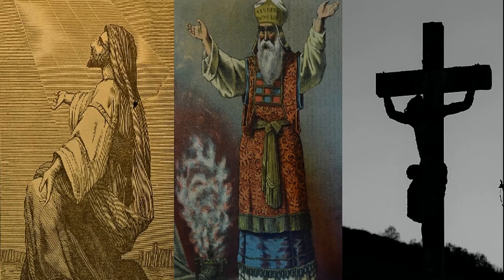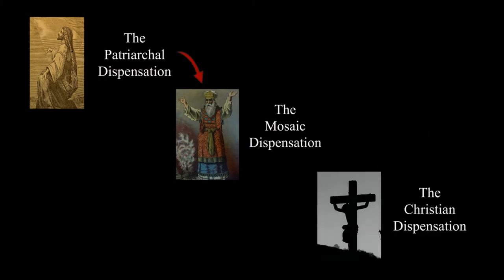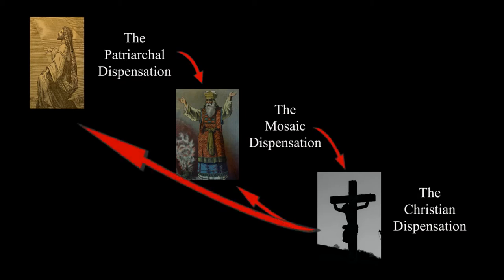Just about everyone who studies the Bible is aware of the blood of Christ and his sacrifice, but may not have knowledge of how that sacrifice is connected to the Mosaic period or even the patriarchal dispensation. One of the goals of this study is to gain an awareness of the way in which all three dispensations are connected. Over the years I've noticed that people believe in Jesus and celebrate his resurrection, but in their minds there's a disconnect between those events and the rest of the Bible.